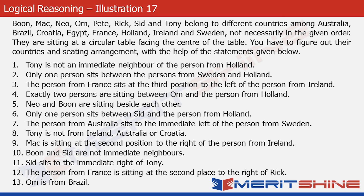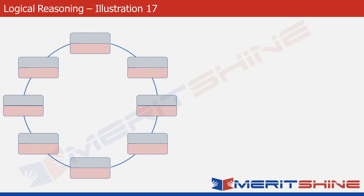Let's proceed with solving the problem. The first step is to create a structure with 8 boxes to accommodate 8 people. We'll use the upper part of each box for the person's name and the lower part for their country. Let's move ahead and go to the statements now.